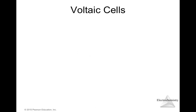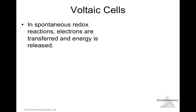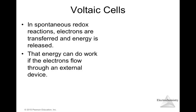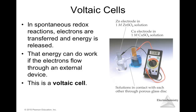Let's talk about voltaic cells. In a spontaneous redox reaction, electrons are transferred and energy is released. The energy can do work if the electrons flow through an external device. This is a voltaic cell — when you have a redox reaction where electrons are transferred, energy is released, and this energy is used to do work.